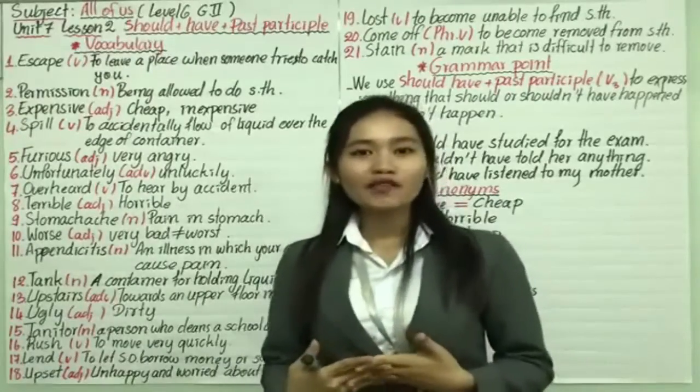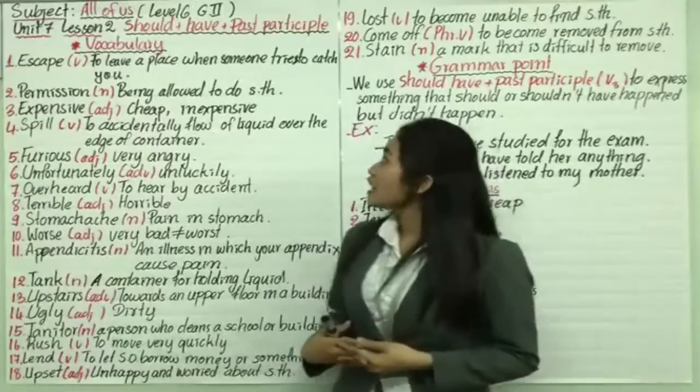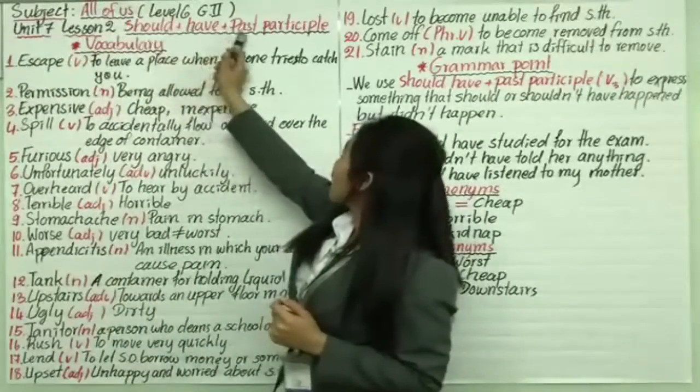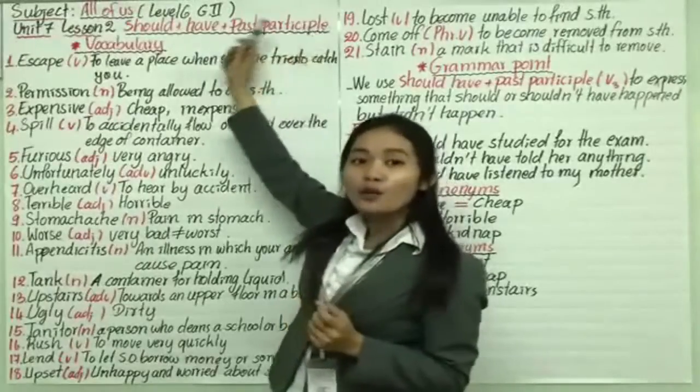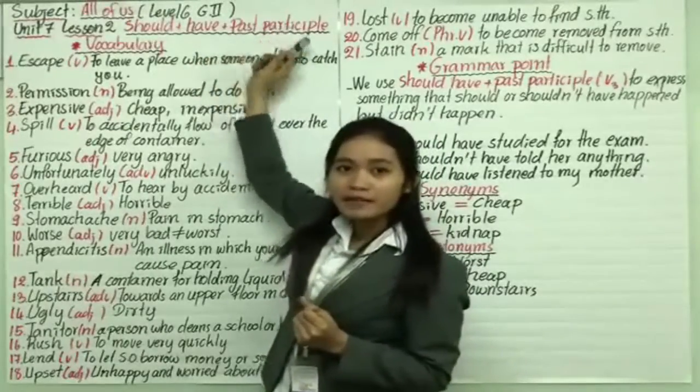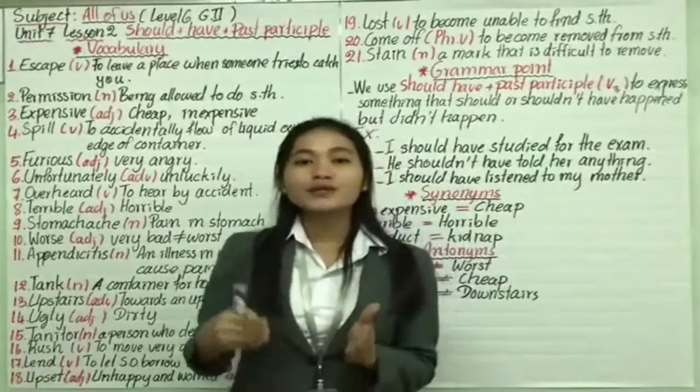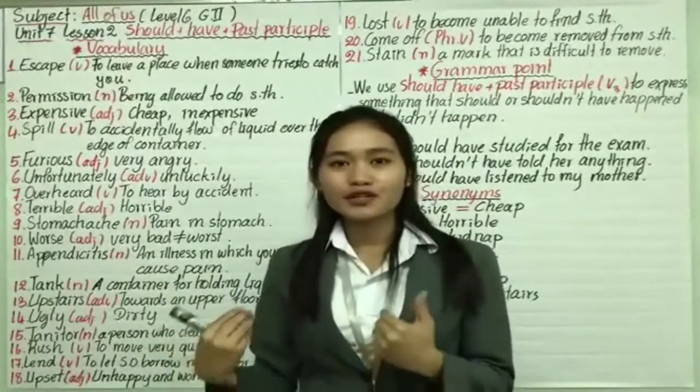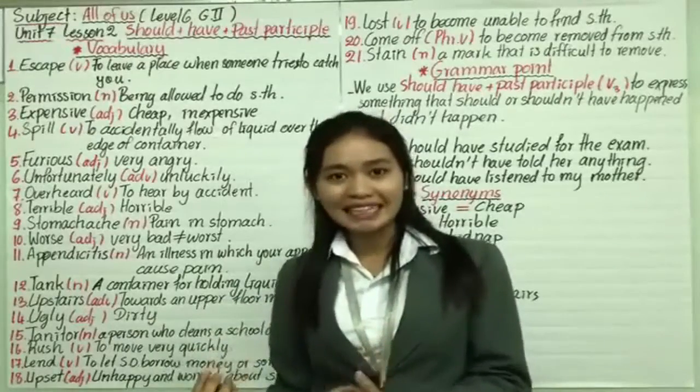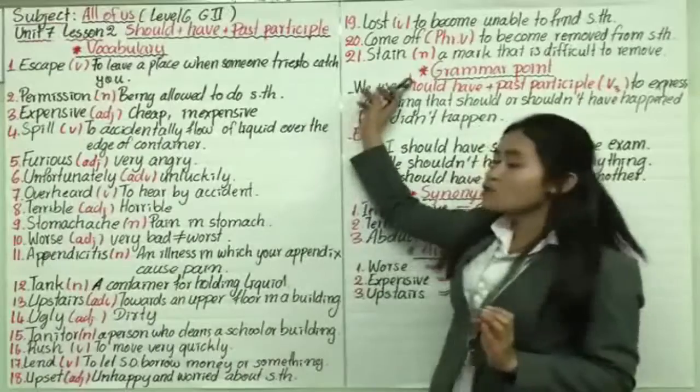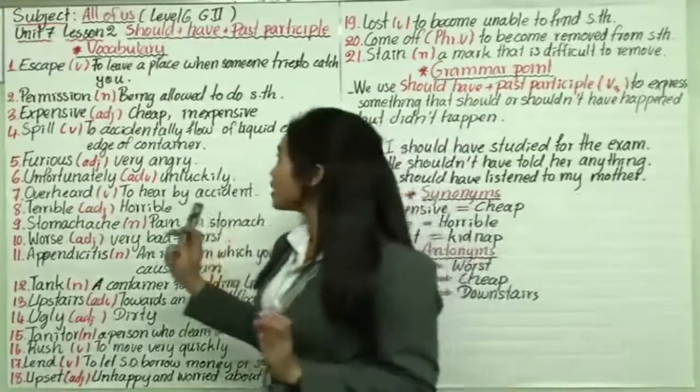Okay everyone, so let's move to our new lesson. Our new lesson in All of Us Use, lesson two, is to talk about should have plus past participle, or we can say verb three. So should have plus past participle means you use it to express something that should or should not happen but didn't happen. In this lesson, I have 21 vocabulary words to explain to all of you. So let's go with me.